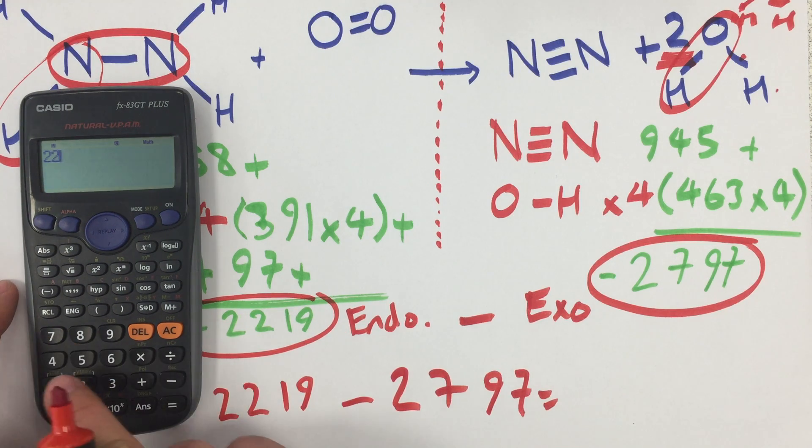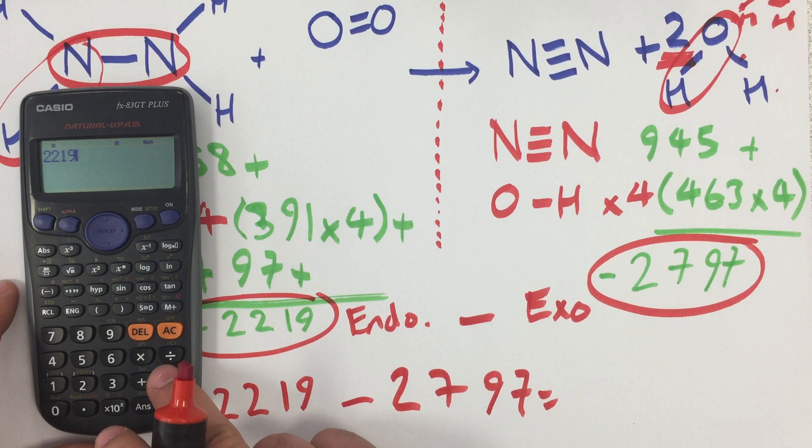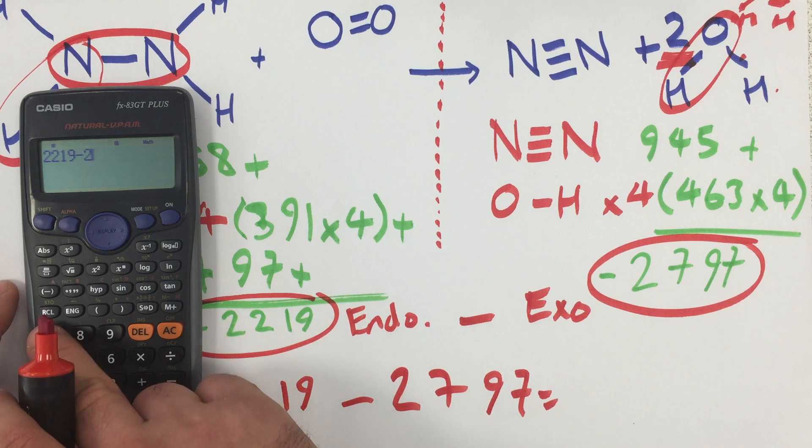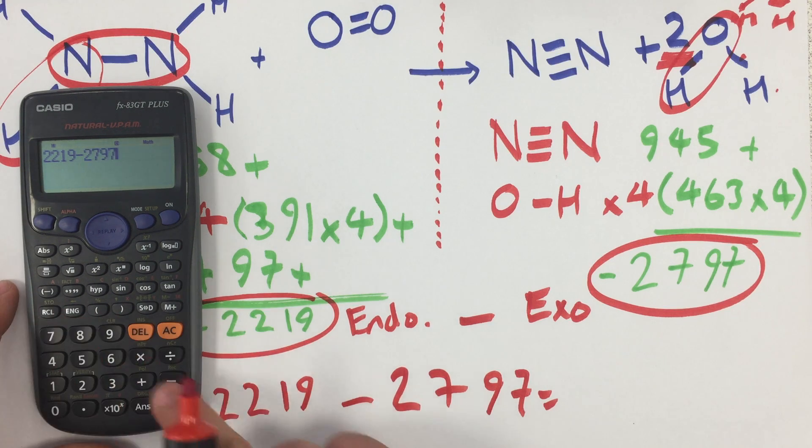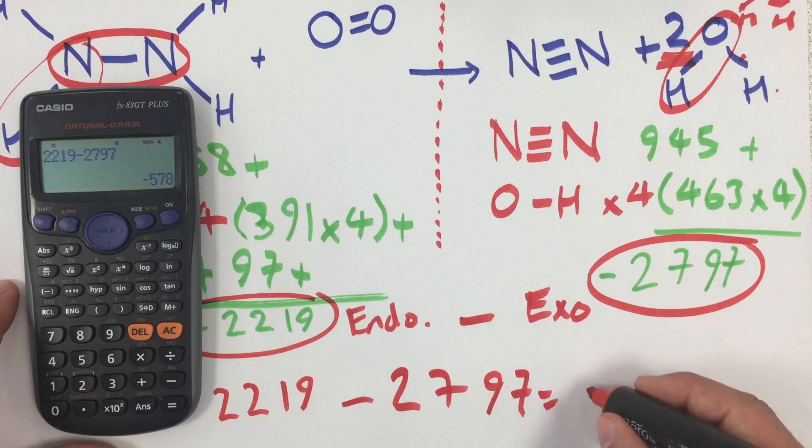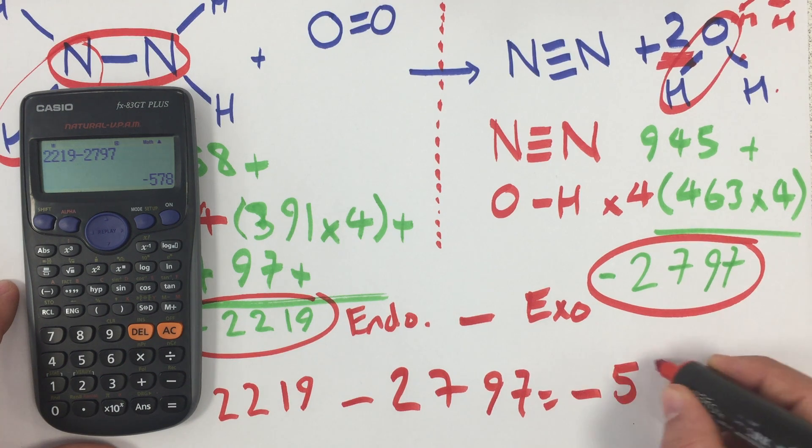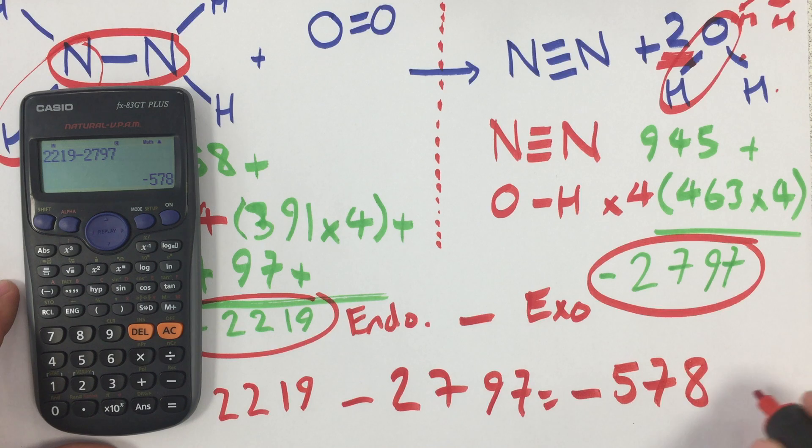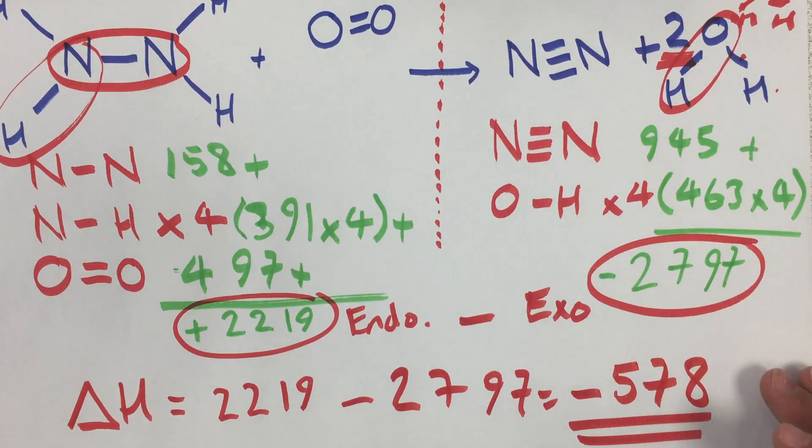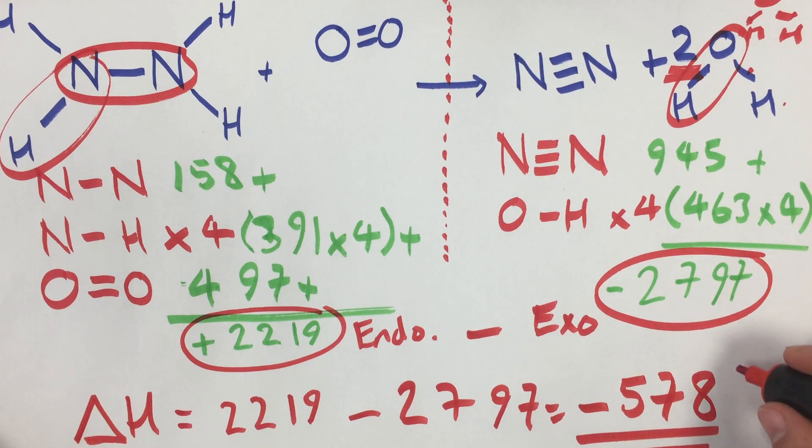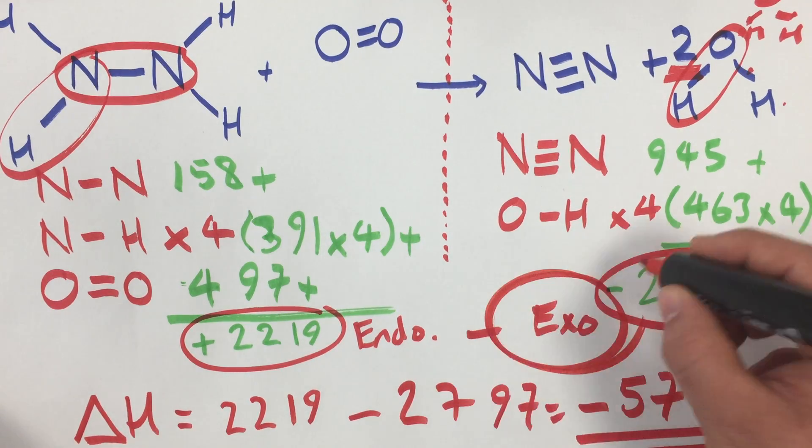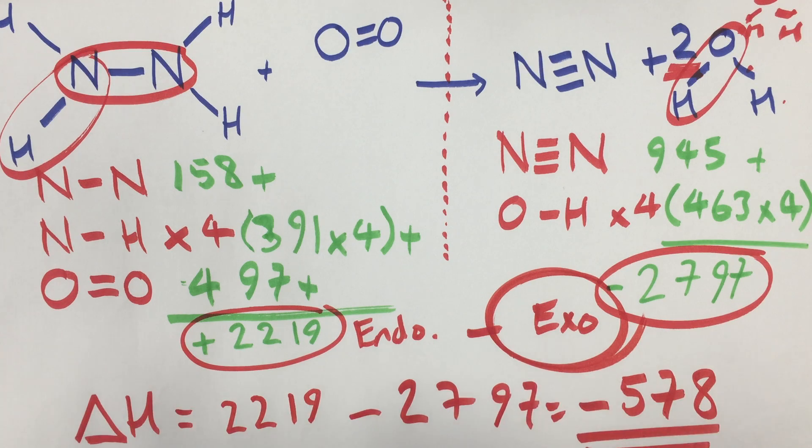Remember, enthalpy is just a word for energy that chemists use, the energy per mole. It's nearly the same thing as energy. So it gives us an overall enthalpy change of minus 578 kilojoules per mole. So because that's minus, that means overall this reaction is exothermic.